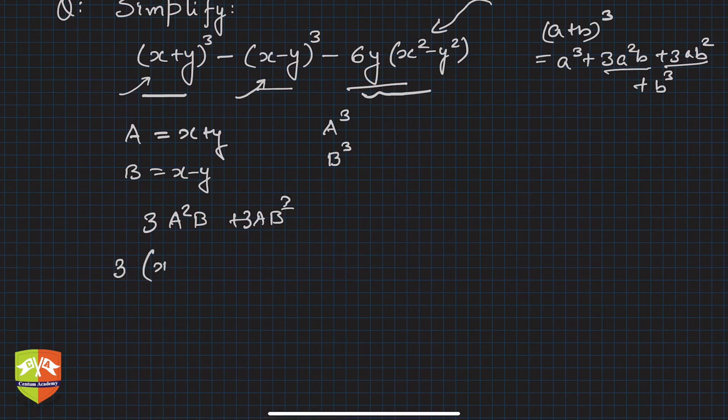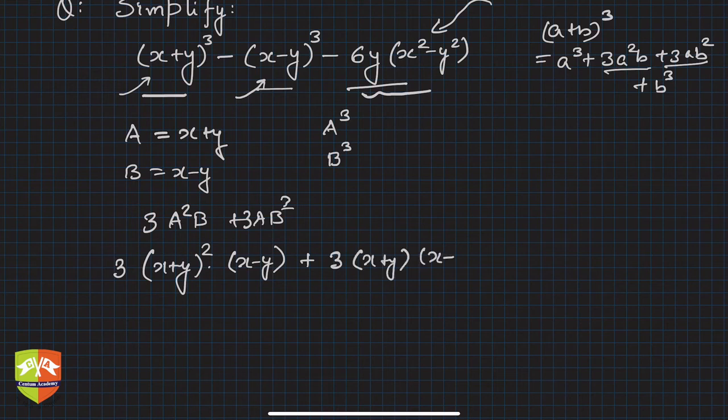This is what we have to get somehow. If you look at this expression, you can take 3 common, (x+y) common, and (x-y) common from both terms.